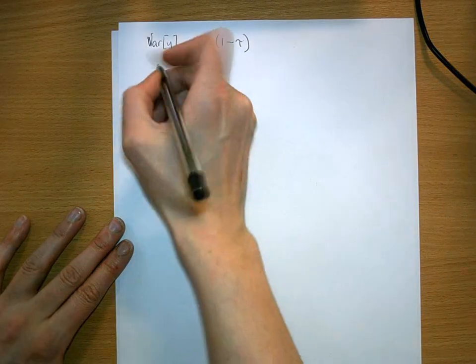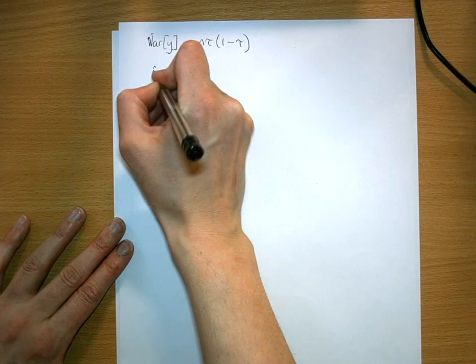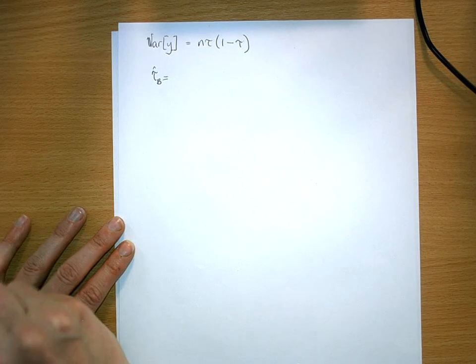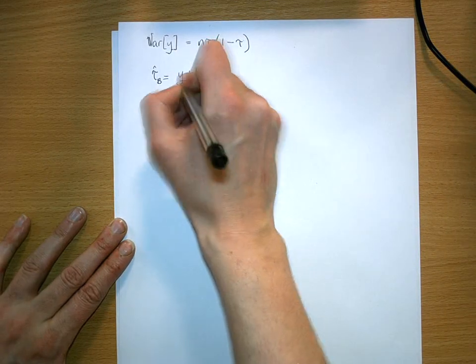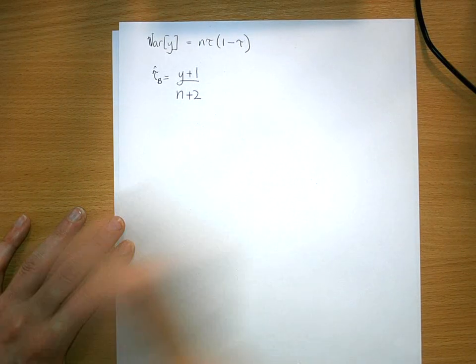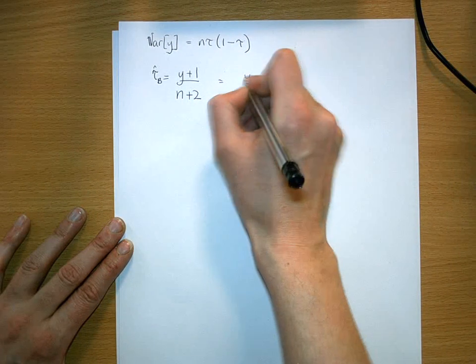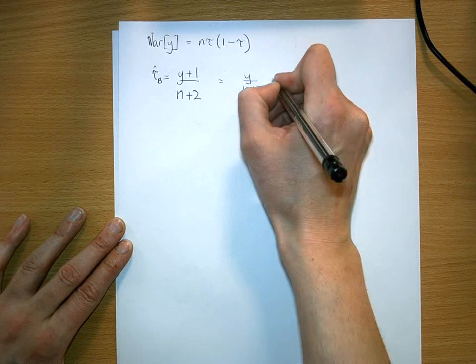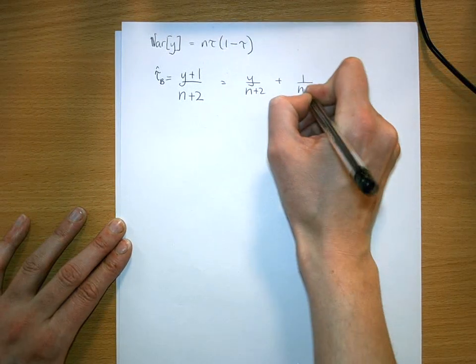Once again, your best estimate is (y+1)/(n+2), as before, which equals y/(n+2) + 1/(n+2).